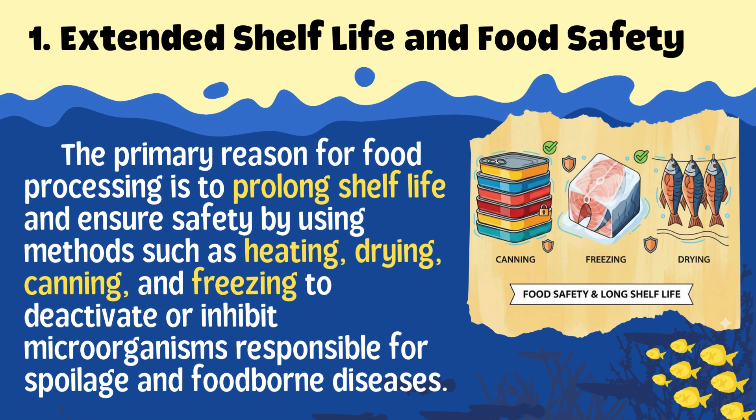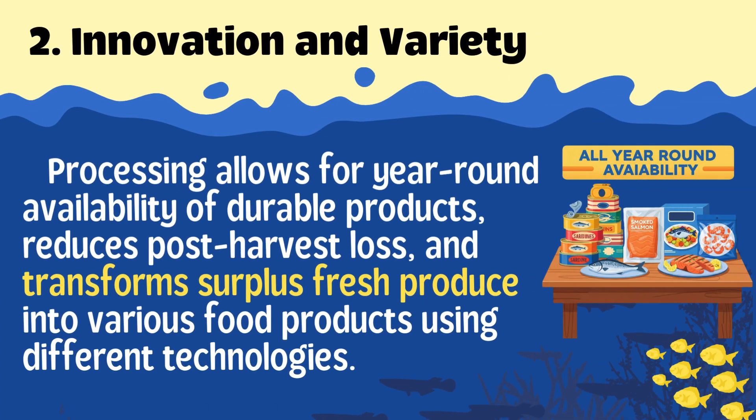Extended shelf life and food safety: the primary reason for food processing is to prolong shelf life and ensure safety by using methods such as heating, drying, canning, and freezing to deactivate or inhibit microorganisms responsible for spoilage and foodborne diseases. Innovation in variety: processing allows for year-round availability of durable products, reduces post-harvest loss, and transforms surplus fresh produce into various food products using different technologies.